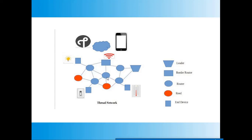This image shows the Thread network. We can see routers forming the backbone of the network. The end devices represent a switch, a lamp or light, and a temperature sensor respectively. The red-colored routers are REEDs which can change their role as per need. There is a leader for this partition, and a border router communicating with the cloud over Wi-Fi.